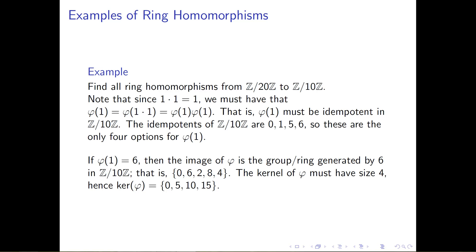So we can see that the kernel of this map is that unique subgroup of size 4, which is the numbers 0, 5, 10, and 15.